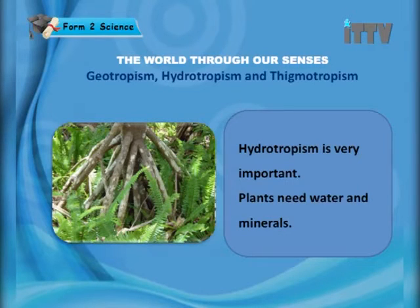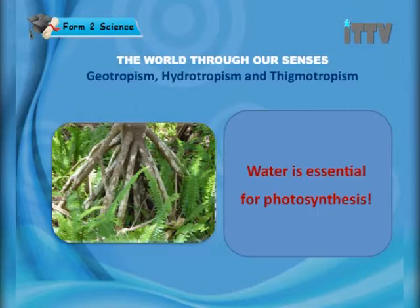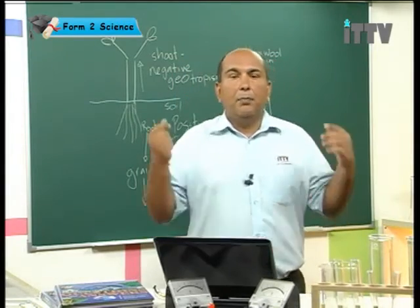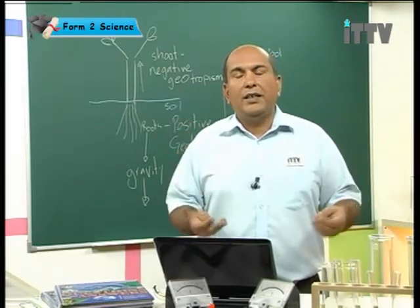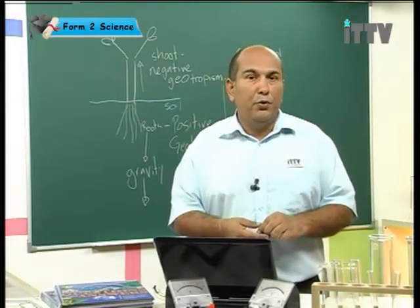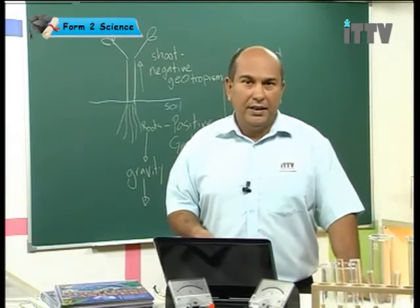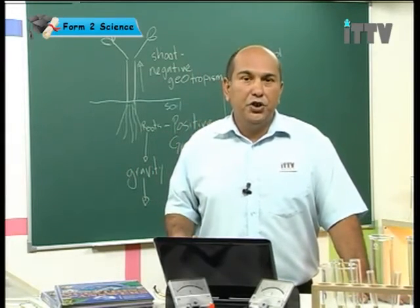Hydrotropism is very important. Plants need water and minerals for survival. Water is essential for photosynthesis — the plant needs photosynthesis to make food and to survive. This means water is the most important thing that the roots have to find, more important than anchoring and giving the plant stability. So remember: hydrotropism is more important than geotropism.